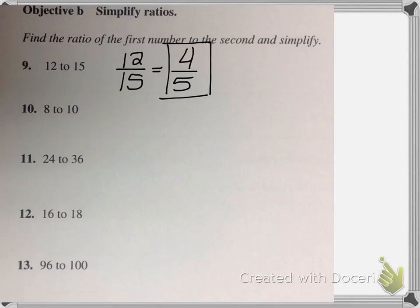We can do this with any two numbers, so let's do 24 and 36. So 24 to 36, written as a fraction, and then rewrite it, simplifying. Well, 12 can definitely go into both of those. 12 goes into 24 2 times, and 12 goes into 36 3 times.